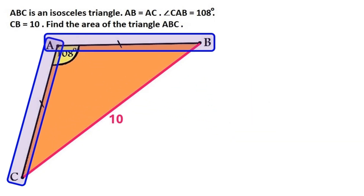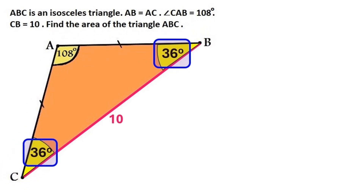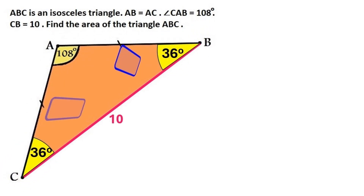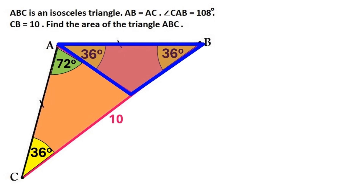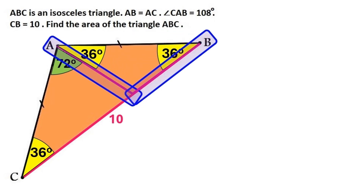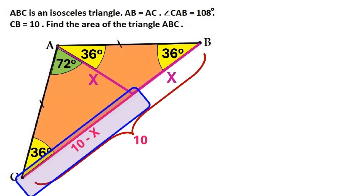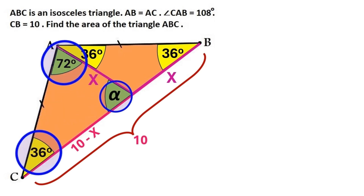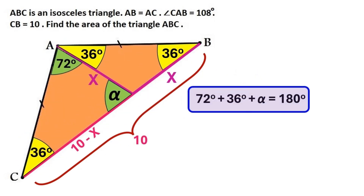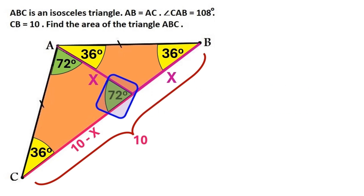First of all, we know this is an isosceles triangle, so it's pretty clear that these two base angles both measure 36 degrees. I'll draw a line here such that this angle over here is 36 degrees too. We've created another isosceles triangle, in which these two sides are equal, and we'll call that X. Naturally, this remaining distance down here is going to be 10 minus X. Looking at the larger triangle, these two interior angles and the third angle alpha must add up to 180 degrees, so we can conclude that alpha is 72 degrees.